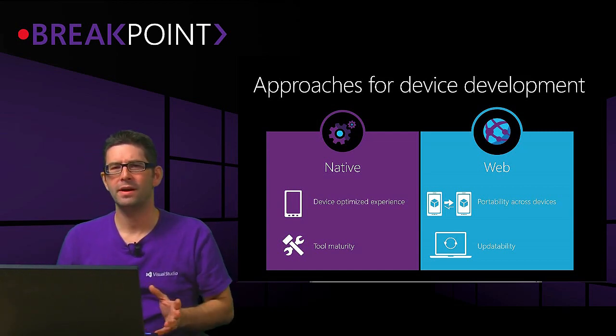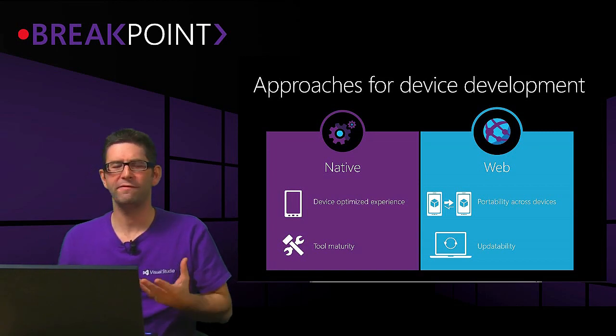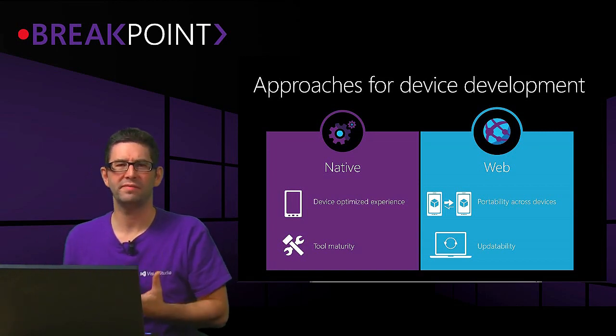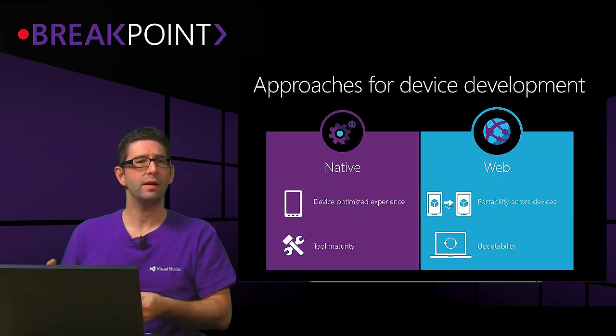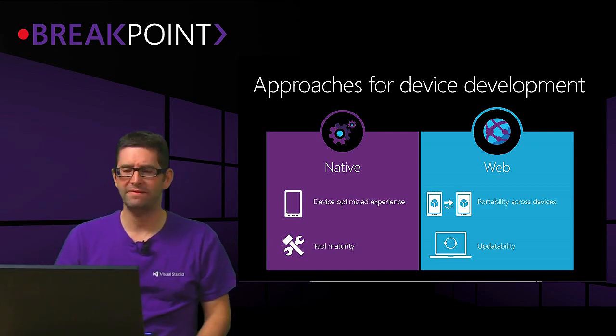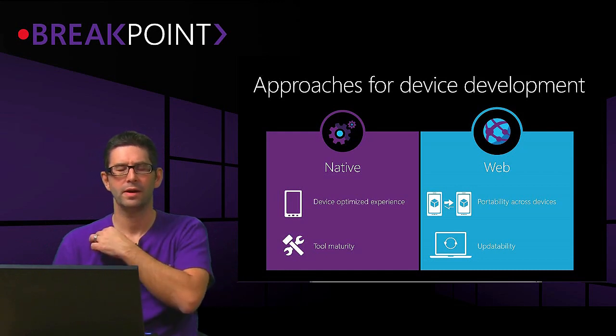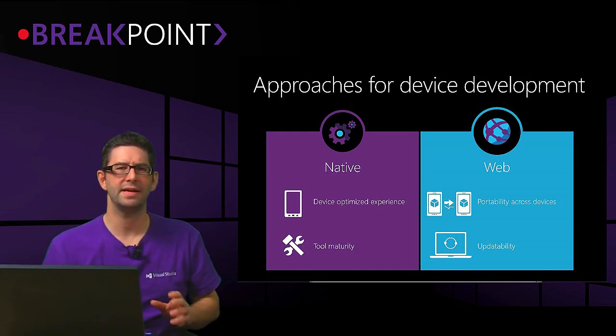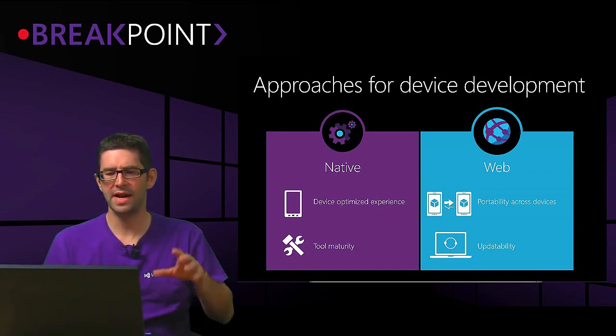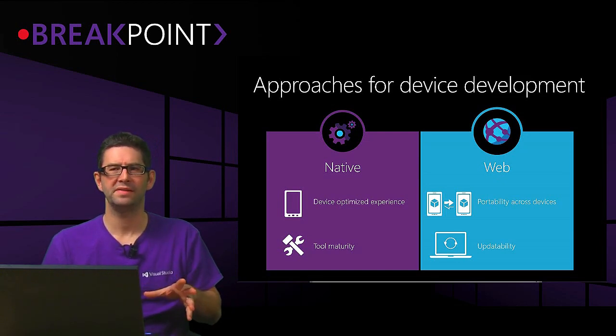Once you figure that out, it's probably fairly obvious in most developers' minds which way they're going to go — whether they're going to build a web app or a native app. Today we're going to talk about a technology called Cordova. The idea behind Cordova is that it's a hybrid application — it's got a little bit of native and a little bit of web.